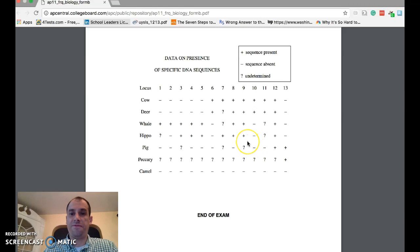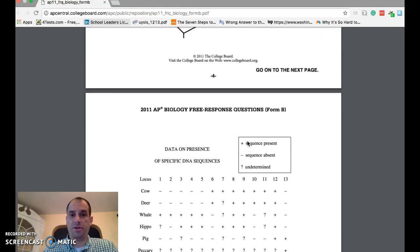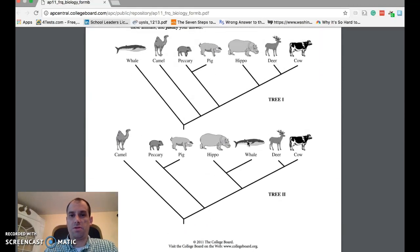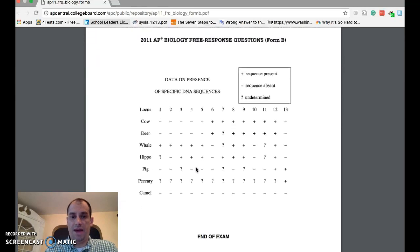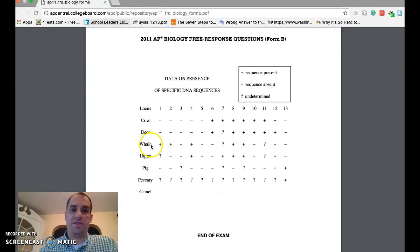That means that they have fewer DNA sequences that are similar. Therefore, this cladogram is not correct. This cladogram is correct because it denotes the hippo and the whale as similar organisms. And that is represented or justified using the evidence in these two lines.